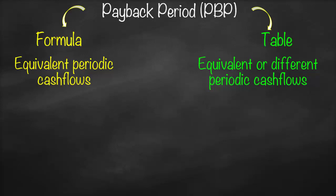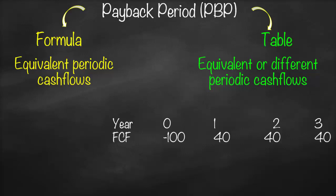We will have an example with years from zero to three. In year zero, we have an initial investment of 100 million — negative because it's a cash outflow. In year one we receive 40 million, in year two we receive 40 million, and in year three we receive 40 million.